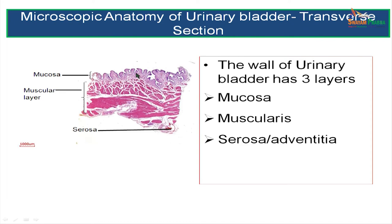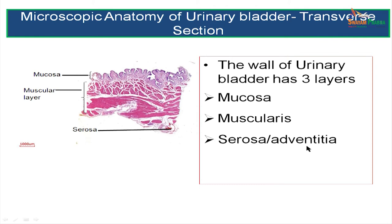The wall of the urinary bladder has got 3 layers: the innermost layer is the mucosa, then the muscularis layer or muscular coat, and the outermost layer is serosa or adventitia. Three layers: mucosa, muscular layer or muscularis, and serosa or adventitia — in some areas it is serosa, in some areas it is adventitia.